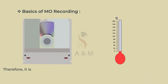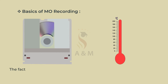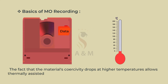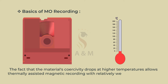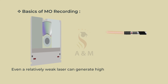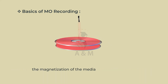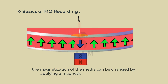Therefore, it is imperative that the only change to the material when it is heated and cooled is a change in magnetization, with no damage to the material itself. The fact that the material's coercivity drops at higher temperatures allows thermally assisted magnetic recording with relatively weak magnetic fields. Even a relatively weak laser can generate high local temperatures when focused at a small spot. When the material is heated and its coercivity is low, the magnetization of the media can be changed by applying a magnetic field from the magnet.